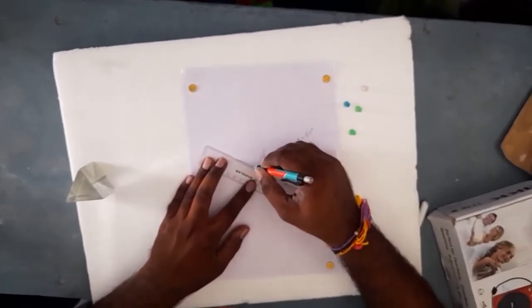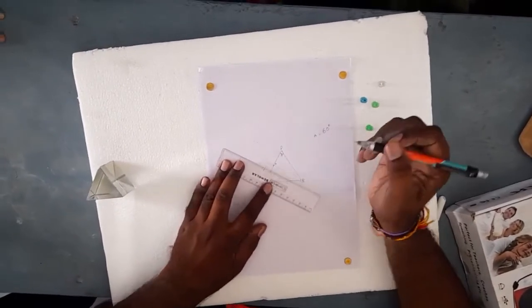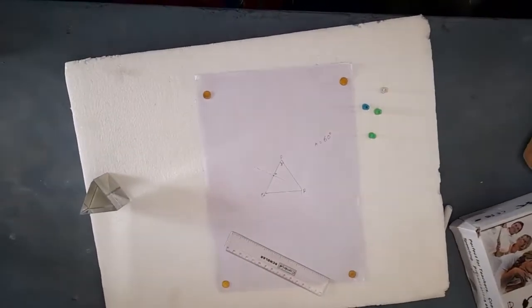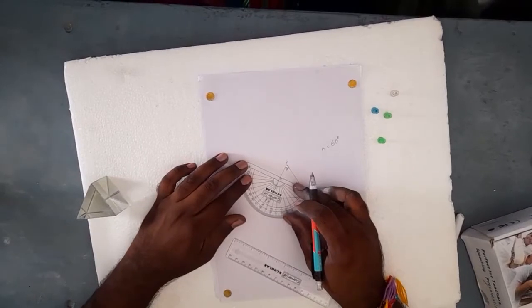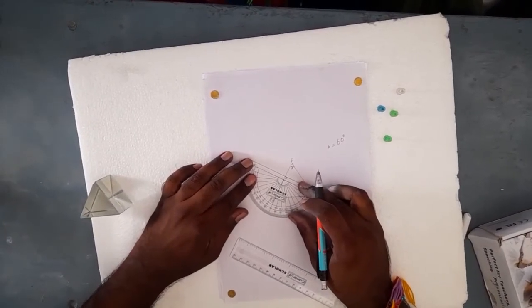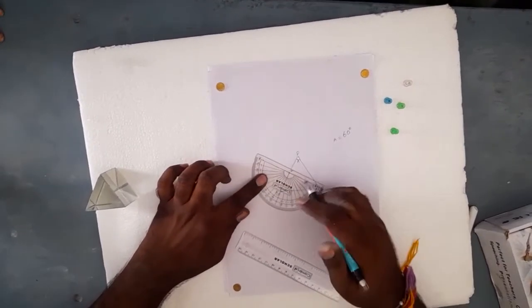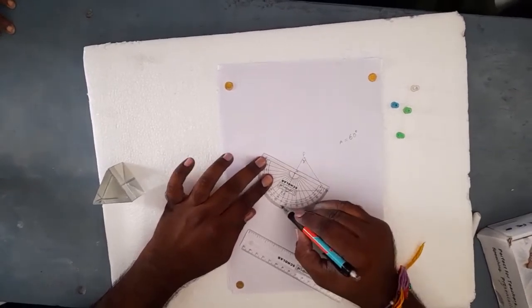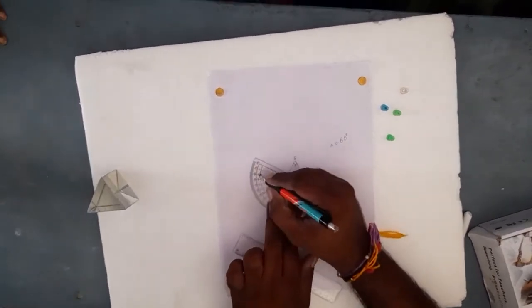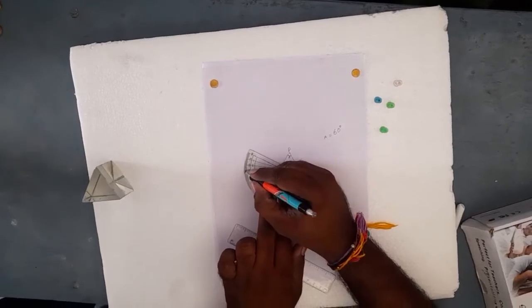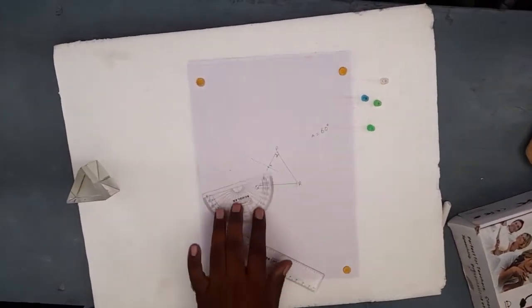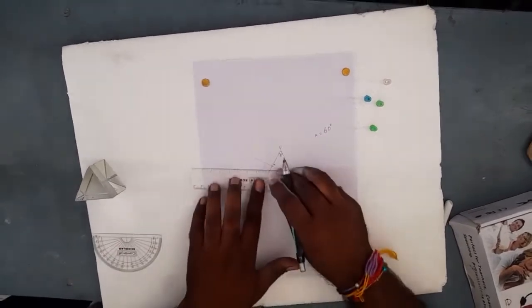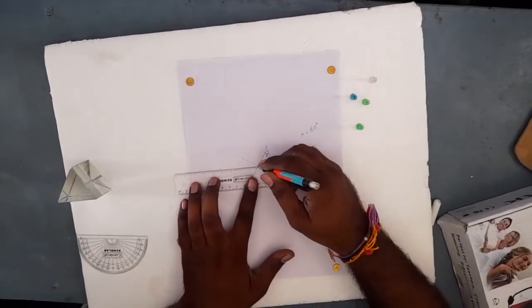I'm taking a protractor and placing its center to coincide with point M. Zero degrees coincides with the normal, PQ coincides with 90 degrees. I'm considering an angle of incidence of 30 degrees. Using the scale, I'm joining the 30 degree line with point M, which is the incident ray.